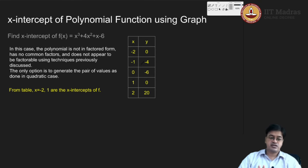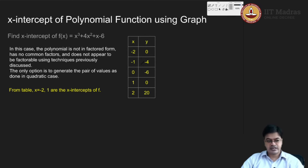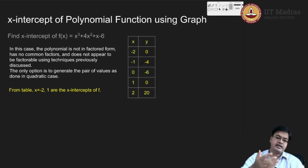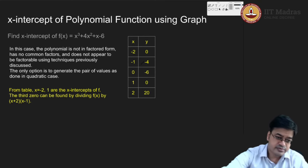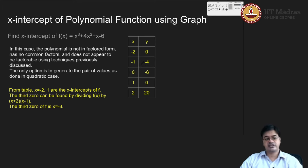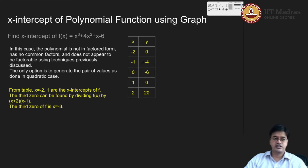Can I use this knowledge to find the third zero? The answer is yes, and we know long division. What you do is consider x plus 2 as one factor and x minus 1 as another factor. Multiply x plus 2 by x minus 1 and treat that as a divisor, and take f(x) as the dividend and perform the long division. You will get the third zero to be x equals minus 3, so x plus 3 is another factor. Since this is a cubic polynomial, it can have at most three roots. So x plus 3, x plus 2, and x minus 1 are the factored form of this equation.